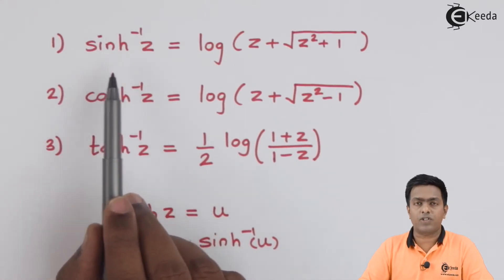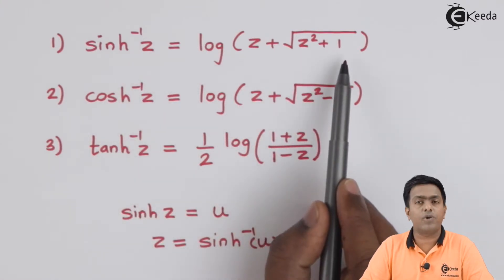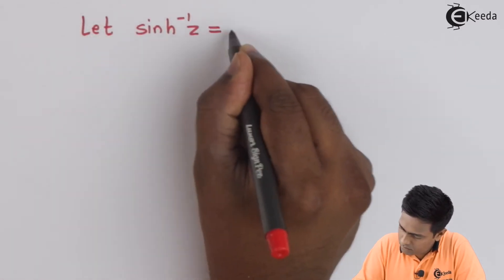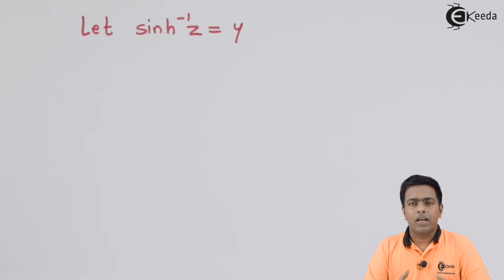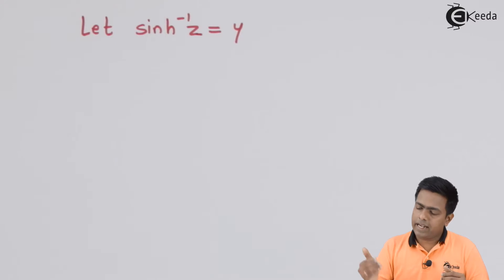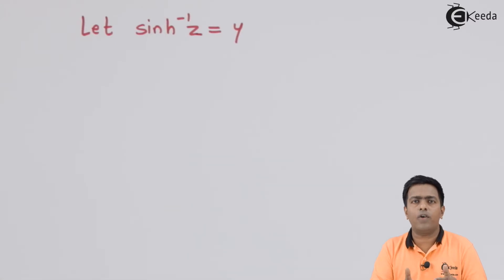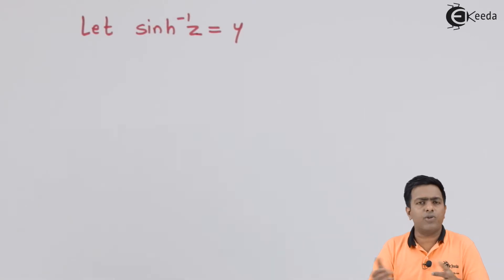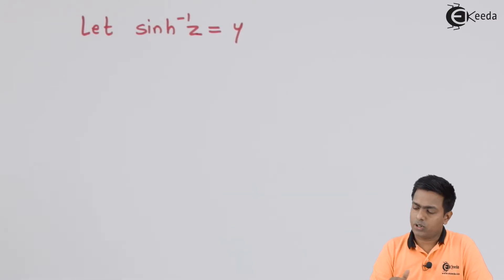The formula is: sinh⁻¹(z) = log(z + √(z² + 1)). Since we don't know the value of sinh⁻¹(z) initially, we assume that value as y. Our task is to prove that y = log(z + √(z² + 1)), and then we will have the formula. Since we have assumed the value is y, to derive the result we take sinh⁻¹ to the right-hand side, so that becomes sinh(y) = z.